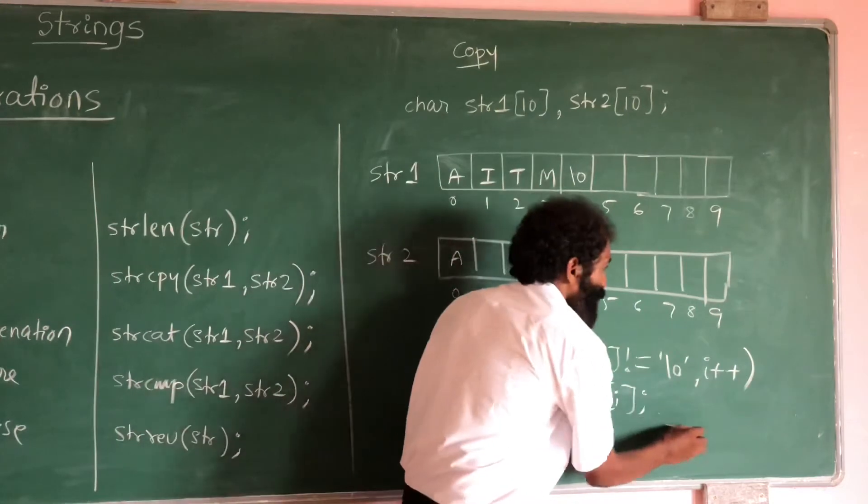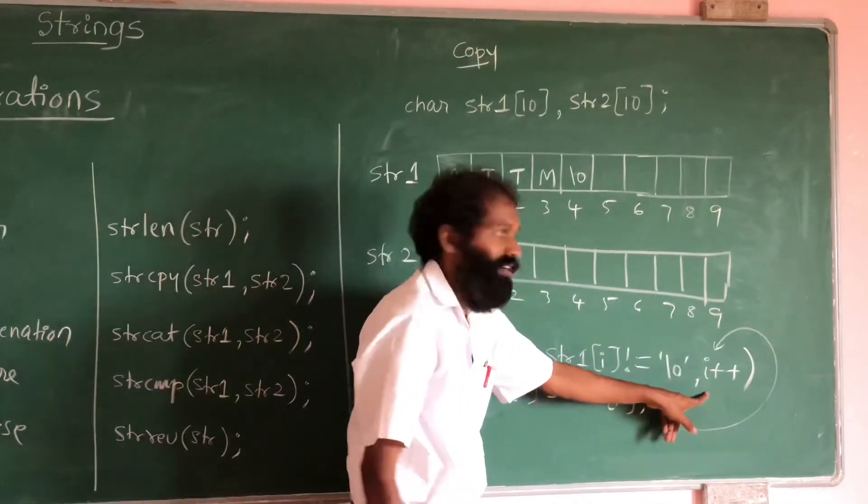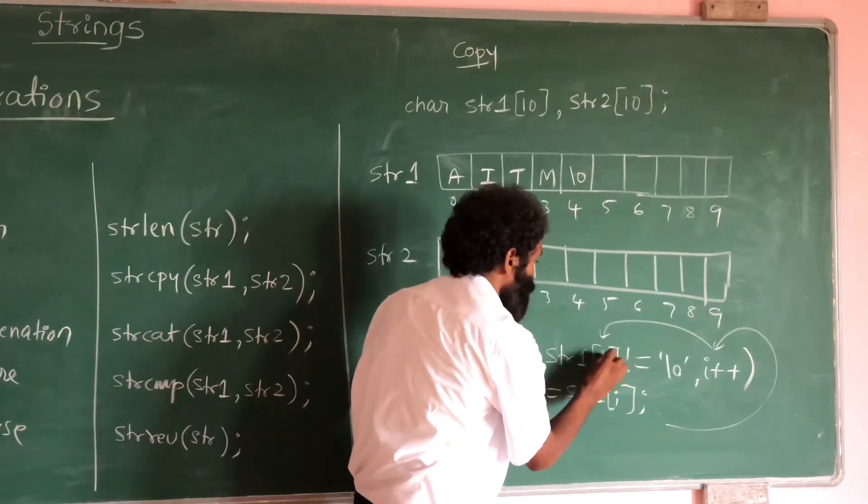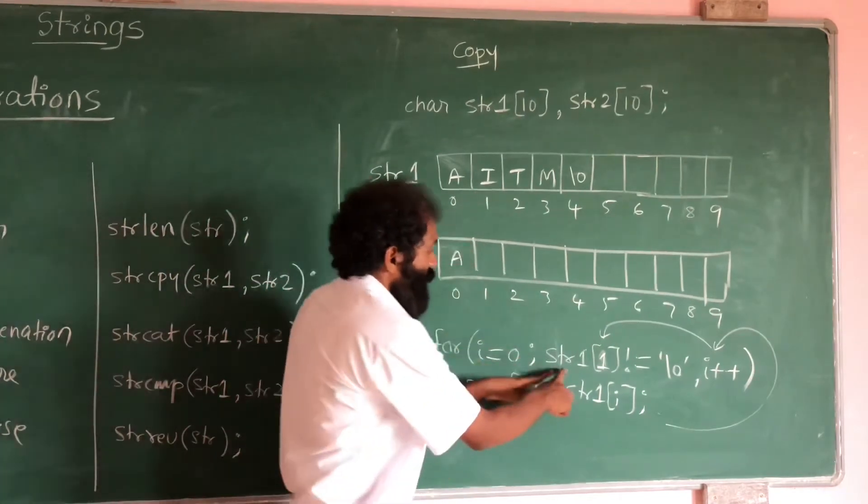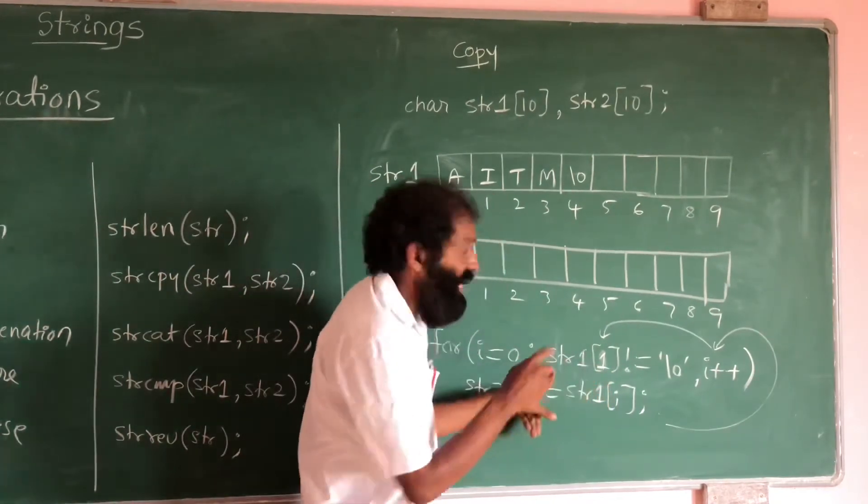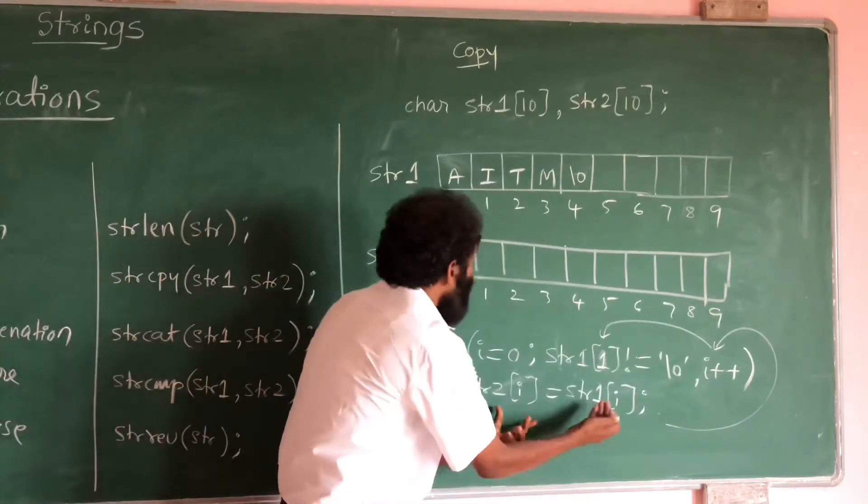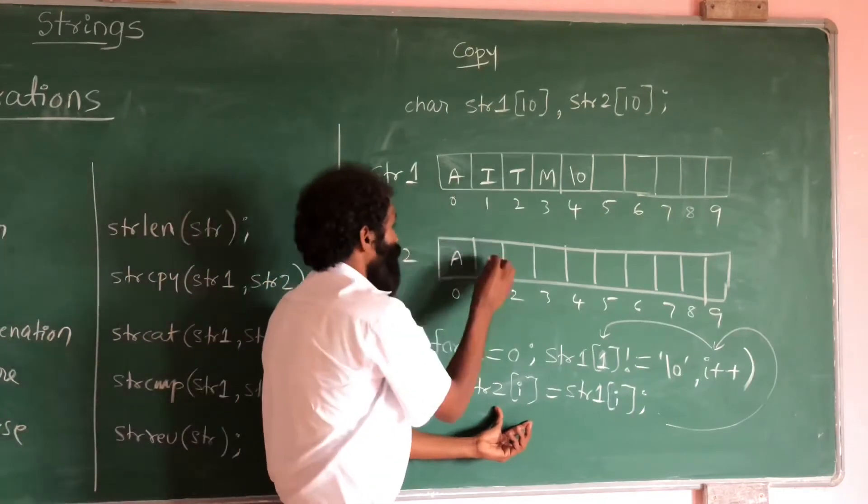Then I value incremented. Now I value becomes 1. String 1 of 1 means I. Is I equal to null? No. So that I will be copied into string 2. Now I will come here.